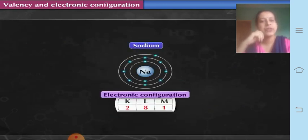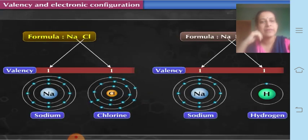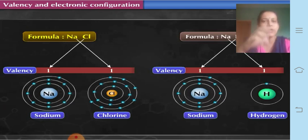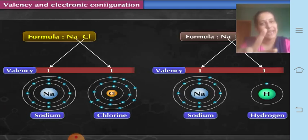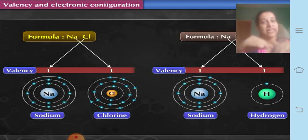Next is sodium. Its electronic configuration is 2, 8, 1 — two in the K shell, eight in the second shell, and one electron in the valence shell (M shell). Therefore the valency of sodium is 1. From the formula NaCl, the valency of sodium is 1 and that of chlorine is also 1. Chlorine has 7 electrons in its outermost shell, but its valency is still 1 — because it requires only 1 electron to complete its octet, whereas sodium has 1 extra electron in the outermost shell which it gives.